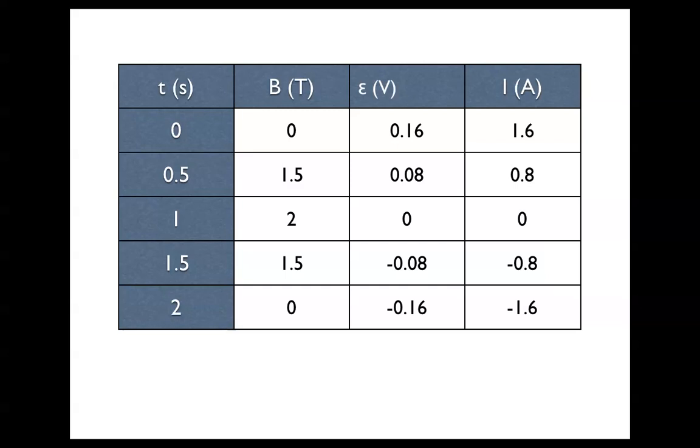And you can see that after t equals 1 second, the voltage and current become negative because the B field starts shrinking again.